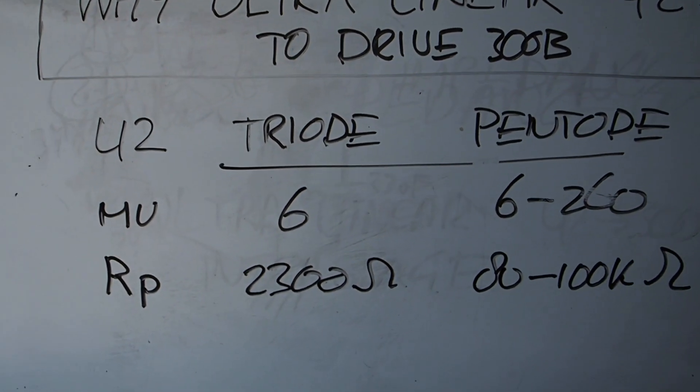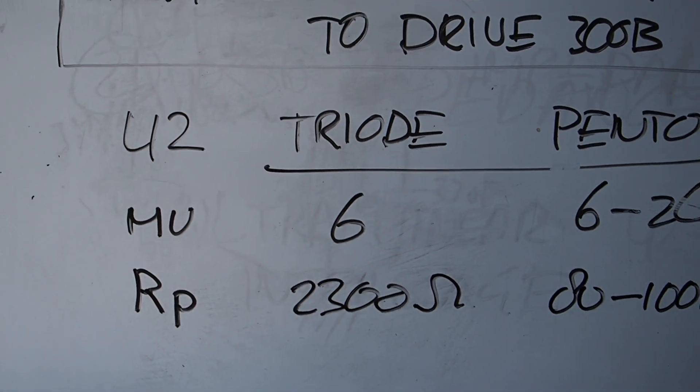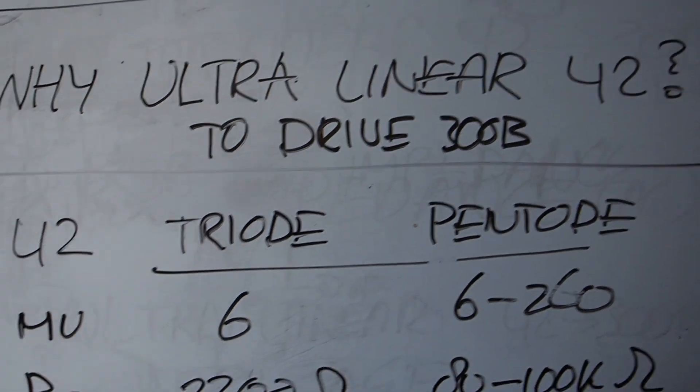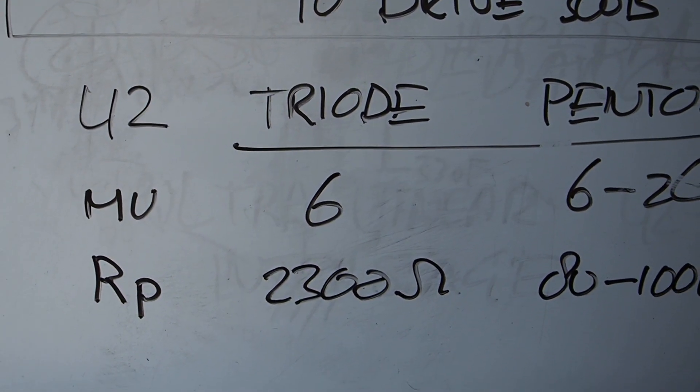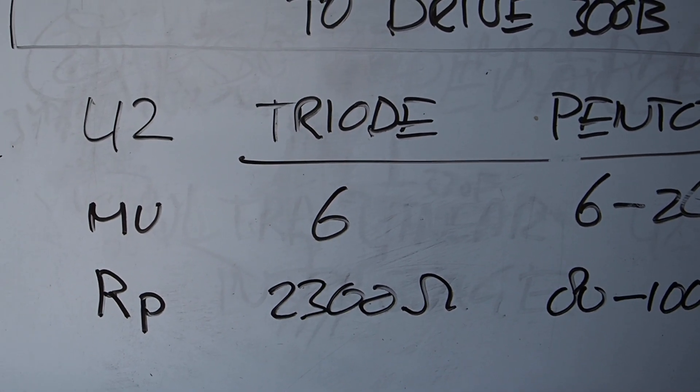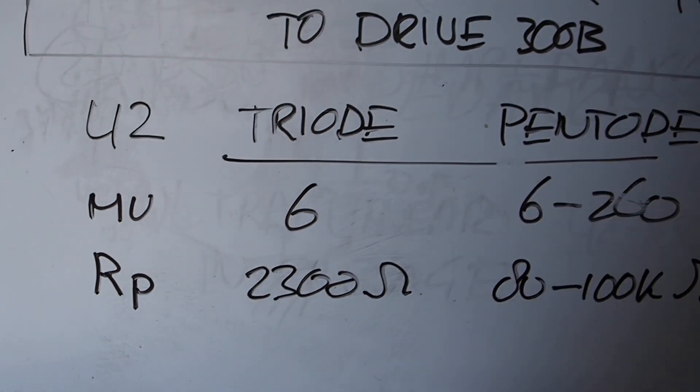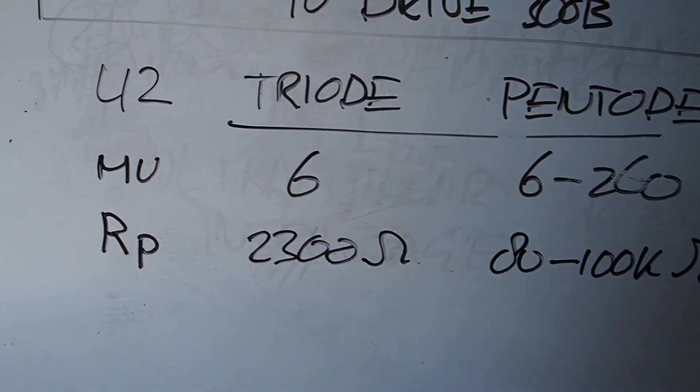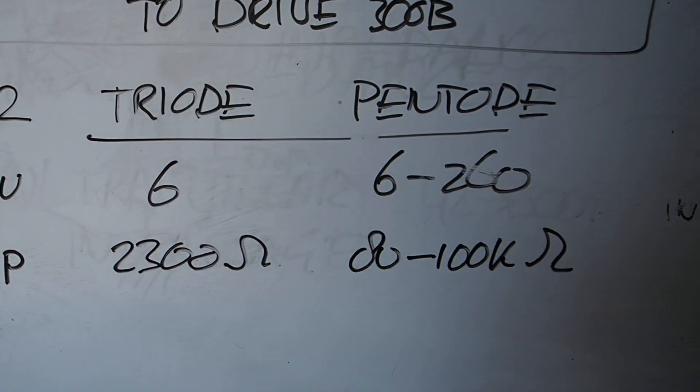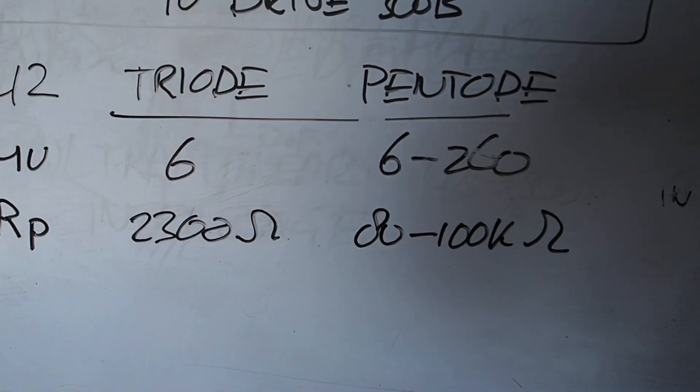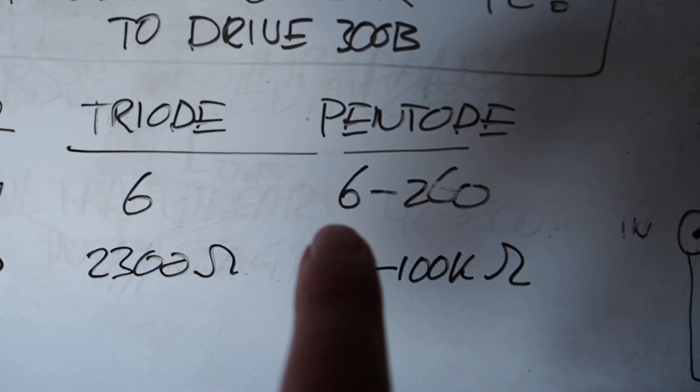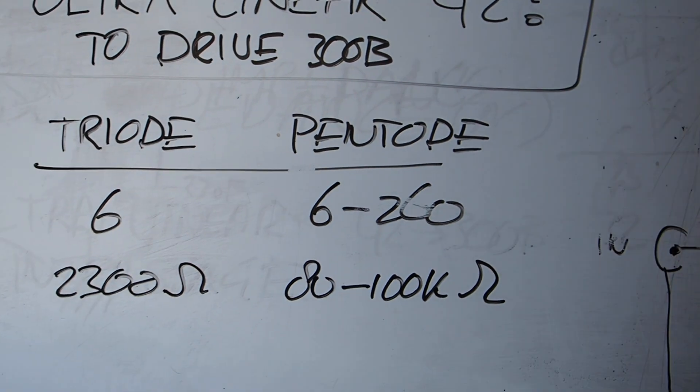However, one of the problems is that when I use the 42 as a triode connected, it only has six times amplification which is definitely not enough to drive the 300B from my sources. However, as a pentode it can go up all the way to 260 times.